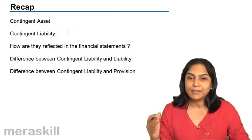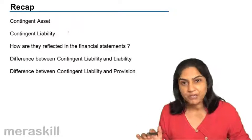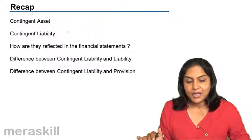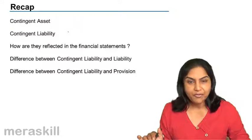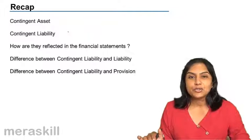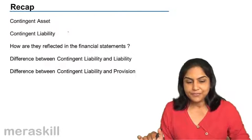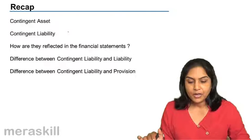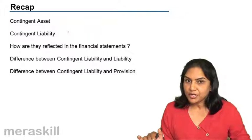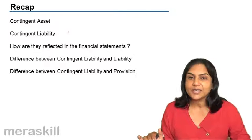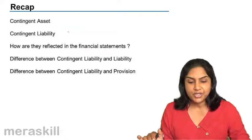So a contingent liability is a liability which may arise in future on the happening or non-happening of an event. This is not recognized and not provided for, but we need to disclose it as a footnote to the financial statements. That is how a contingent asset is not disclosed in the financial statements, whereas a contingent liability is disclosed by way of a note.